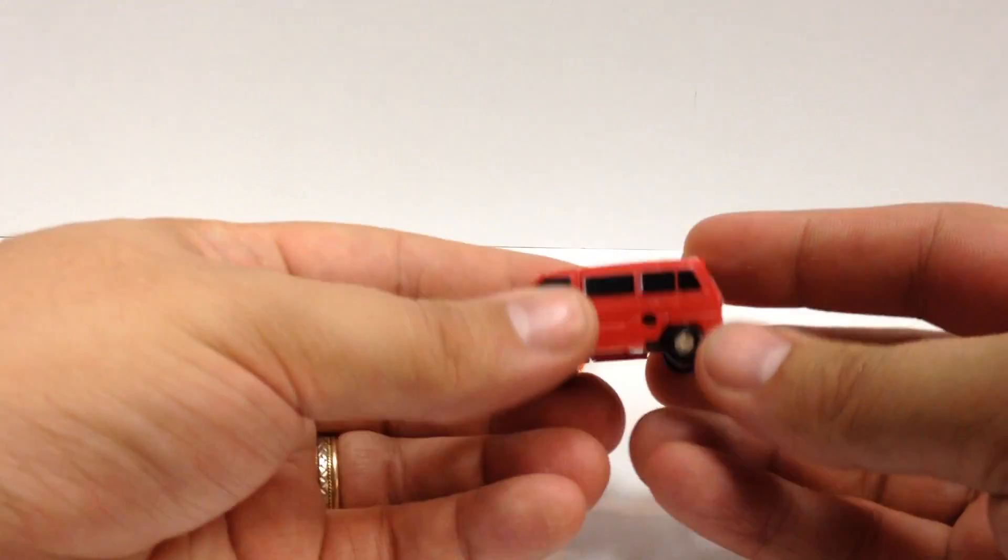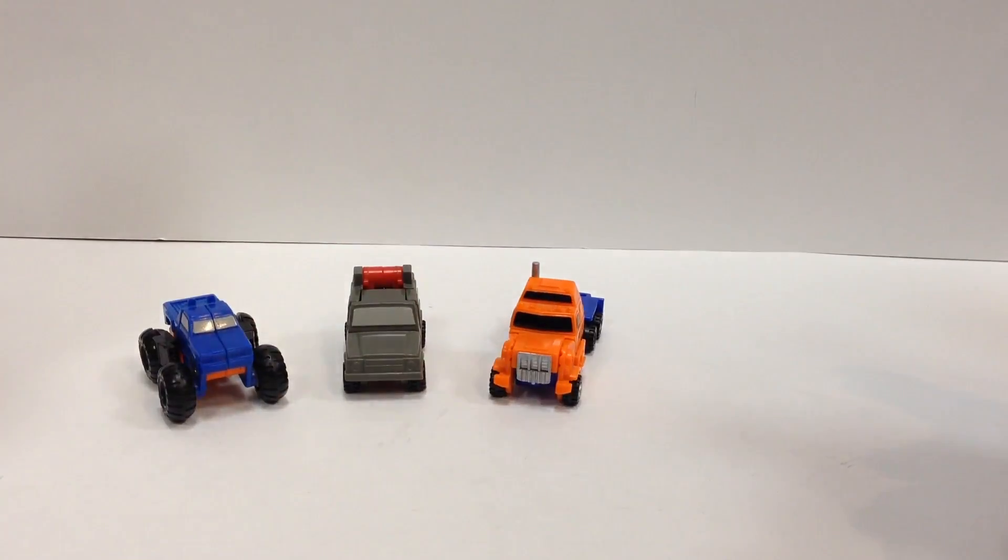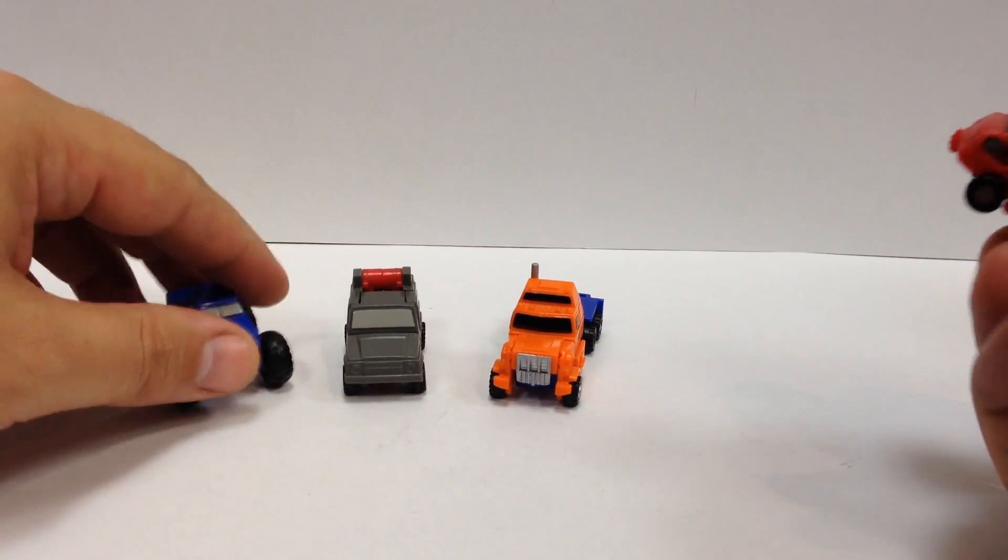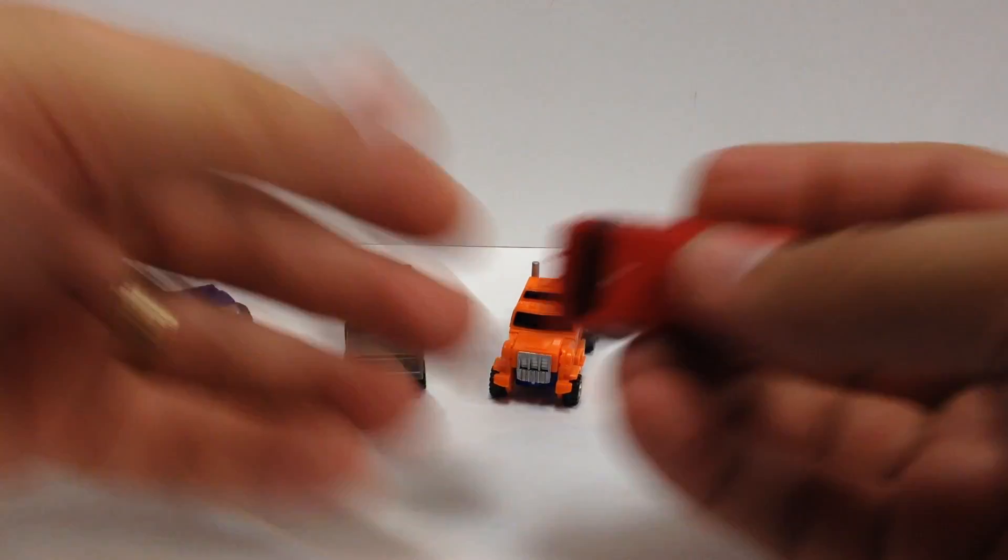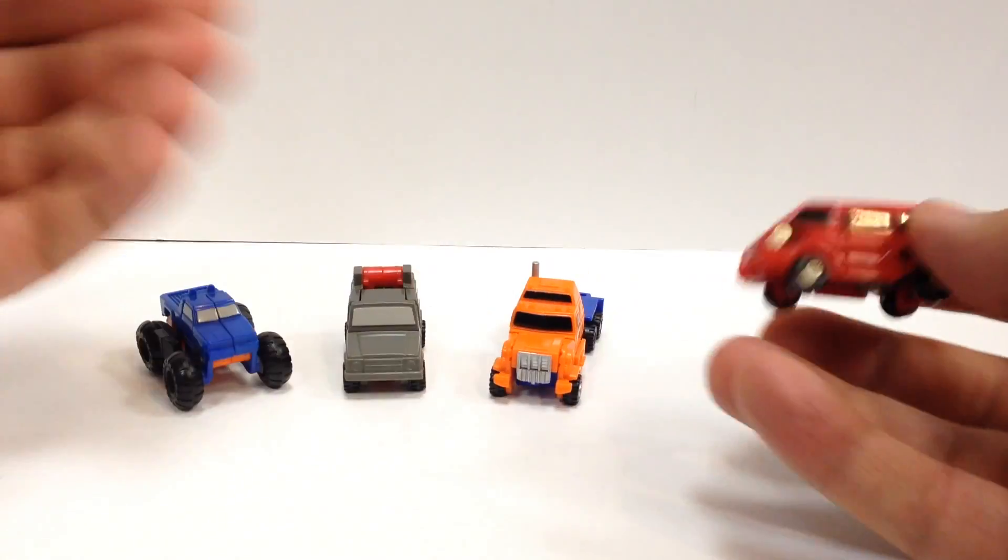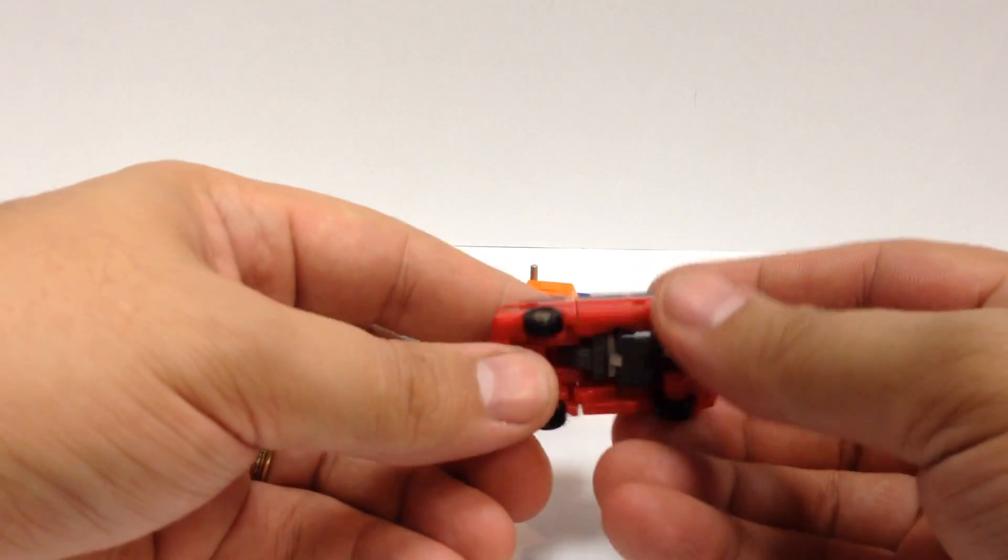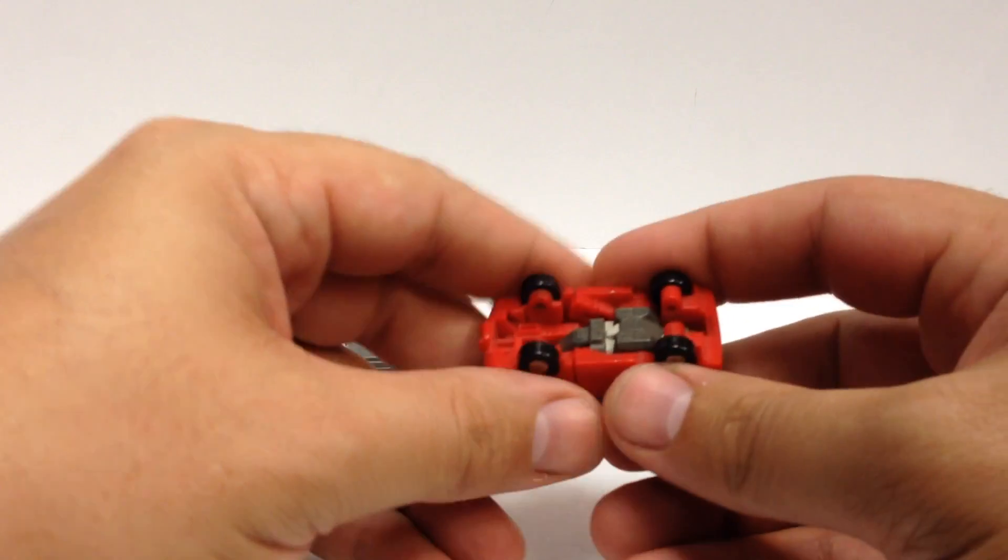Really kind of cool. I passed up on a baggie that had like seven or eight Micro Masters in it that was ten bucks because I was looking around the convention. When I came back to get them they were gone, but I found this whole set for ten bucks, all four of them, and they're in really nice shape so I went ahead and nabbed them.